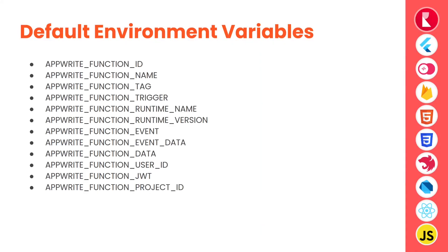What are the default environment variables available during the execution of a function? While executing a function, there are certain default variables that are handy and available in each execution. First, the function ID — the unique ID of the function being executed. Functions name — the name of the function being executed. Function tag — the ID of the deployed or activated tag being executed. And trigger — what triggered the function, which can be event, HTTP, or schedule.